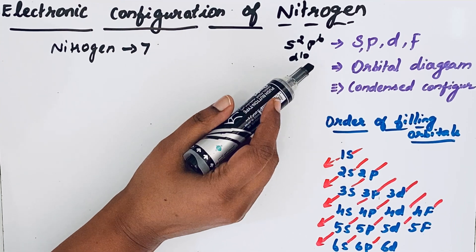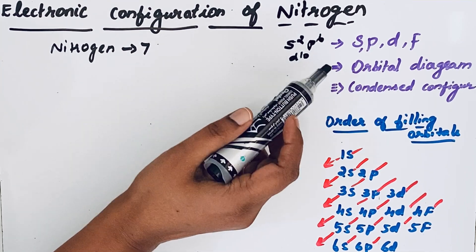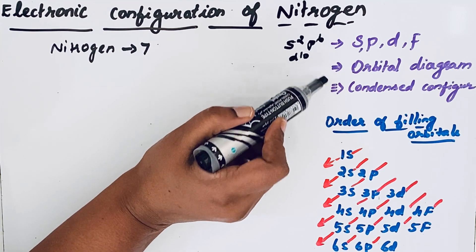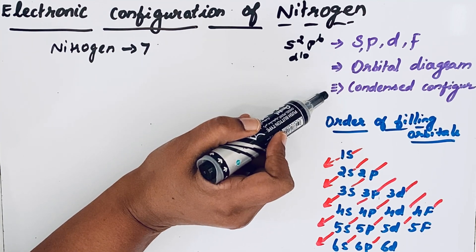Actually electronic configuration can be written in three ways: SPDF notation, the second one is orbital diagram, then the third one is condensed configuration.